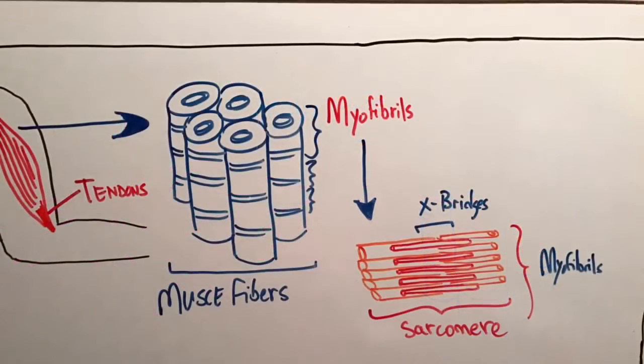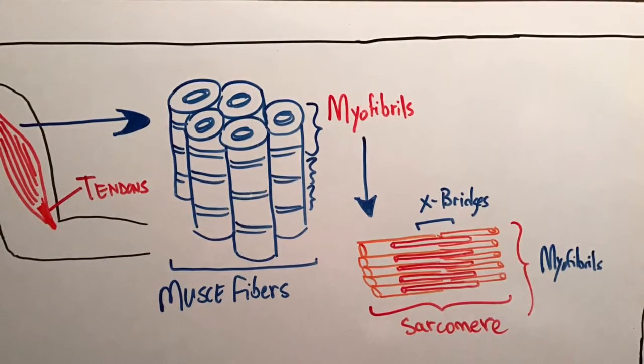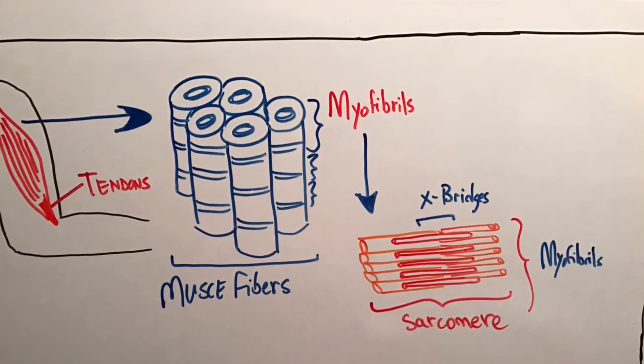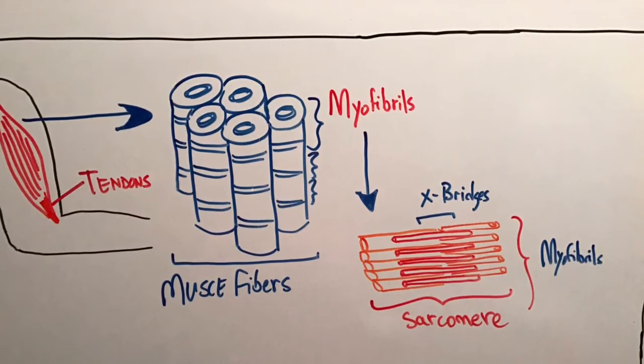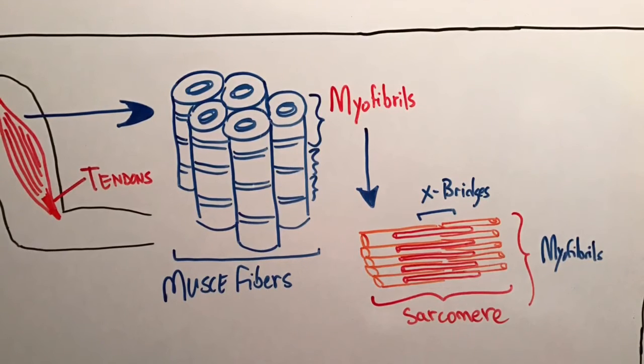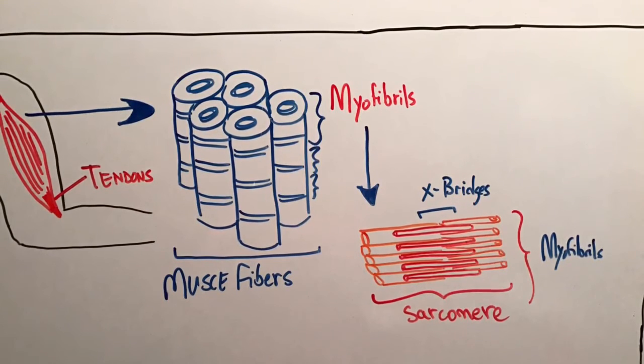Each fiber is made of myofibrils which are in turn made of repeated cylindrical units called a sarcomere. The sarcomere forms the smallest functional unit of a muscle fiber with respect to contraction.